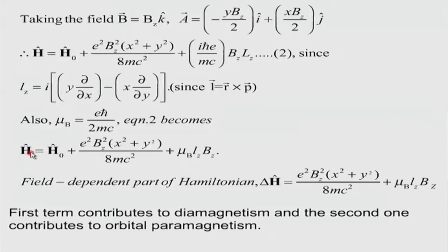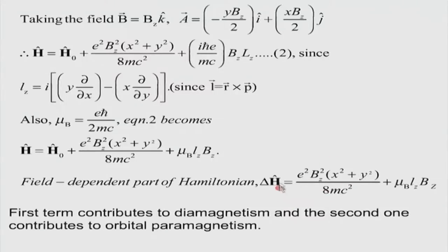We only need to worry about the extra contribution to the Hamiltonian arising from the applied magnetic field — I am calling it δH. Please remember I am not using H for the magnetic field symbol to avoid confusion with the Hamiltonian, which is also H. All magnetic fields I am taking as B, and H always stands for the Hamiltonian. So we have to worry about what is the effect of this term and that term — these two are the perturbations acting on the original Hamiltonian of the hydrogen-like atom.